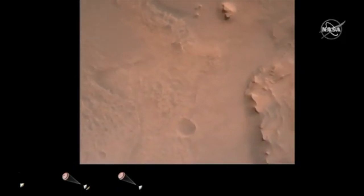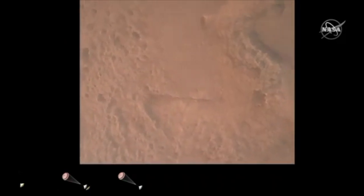Perseverance is continuing to descend on the parachute. We are coming upon the initialization of terrain relative navigation and subsequently the priming of the landing engines. Our current velocity is about 90 meters per second at an altitude of 4.2 kilometers.